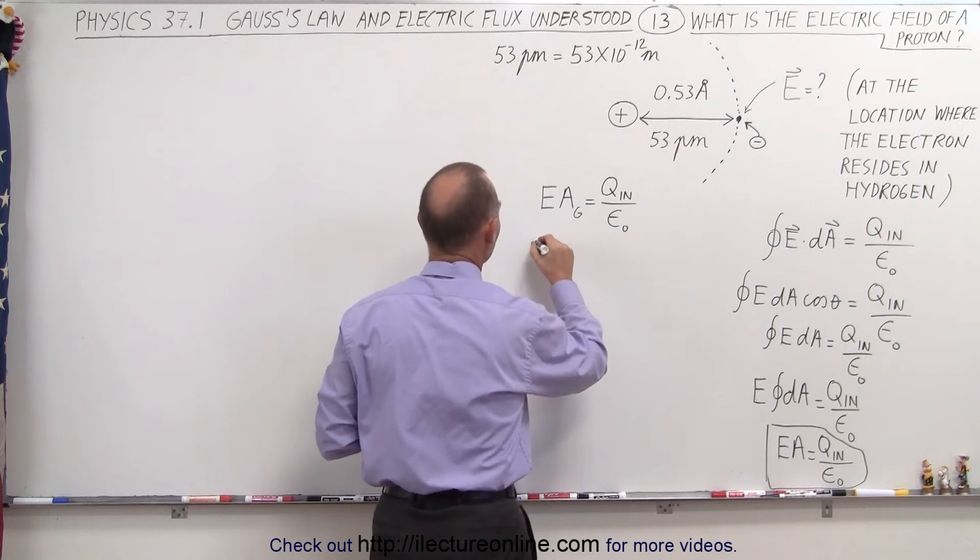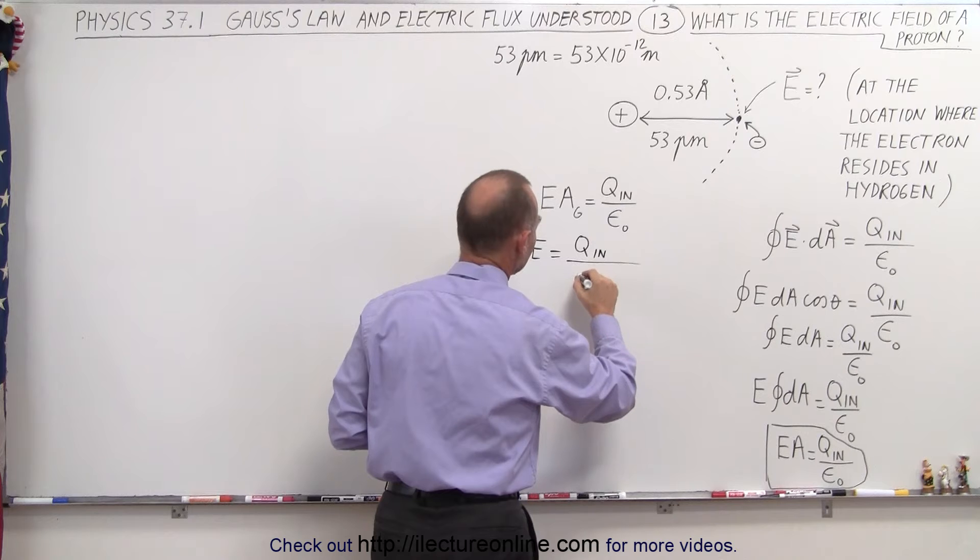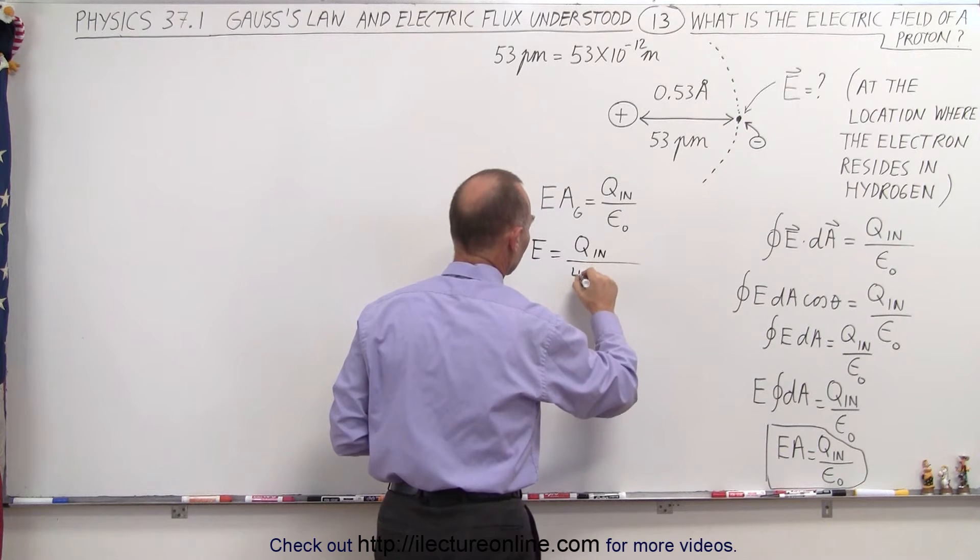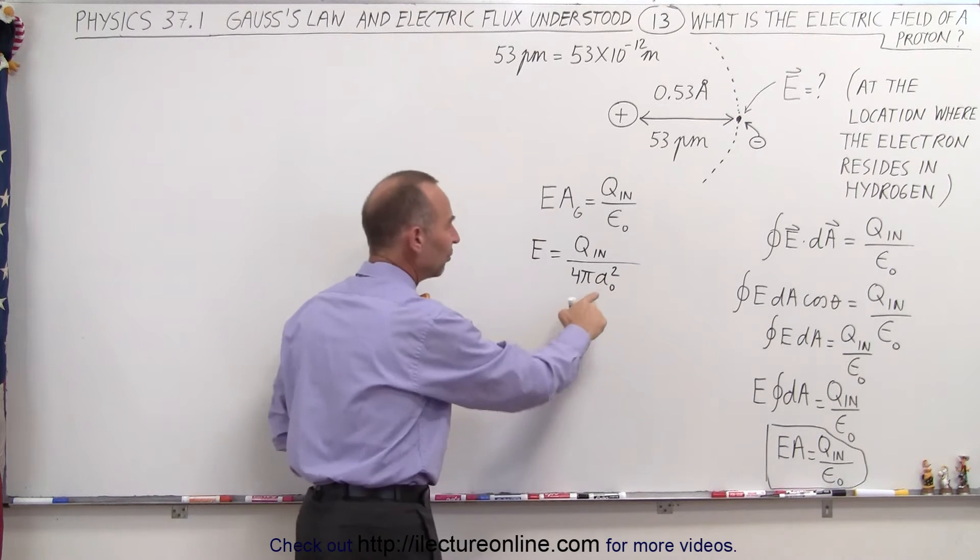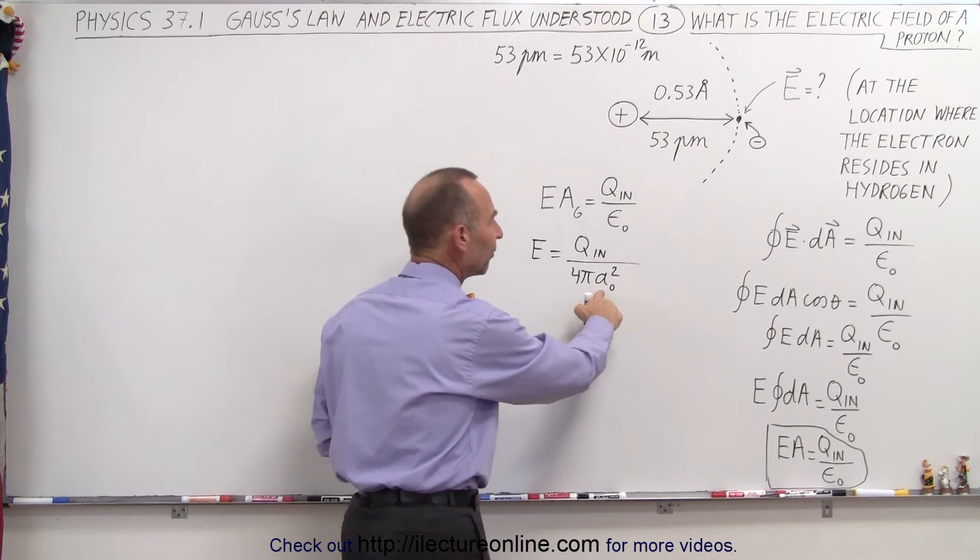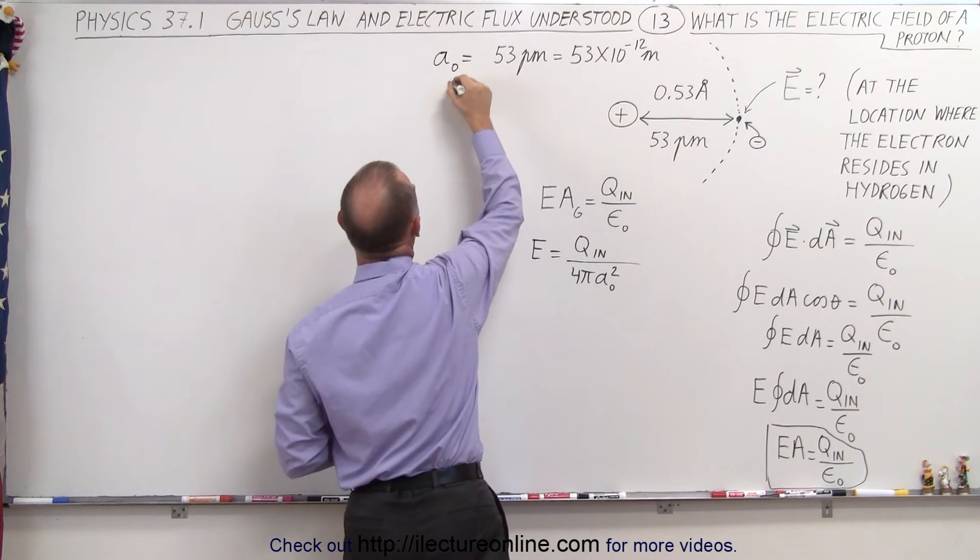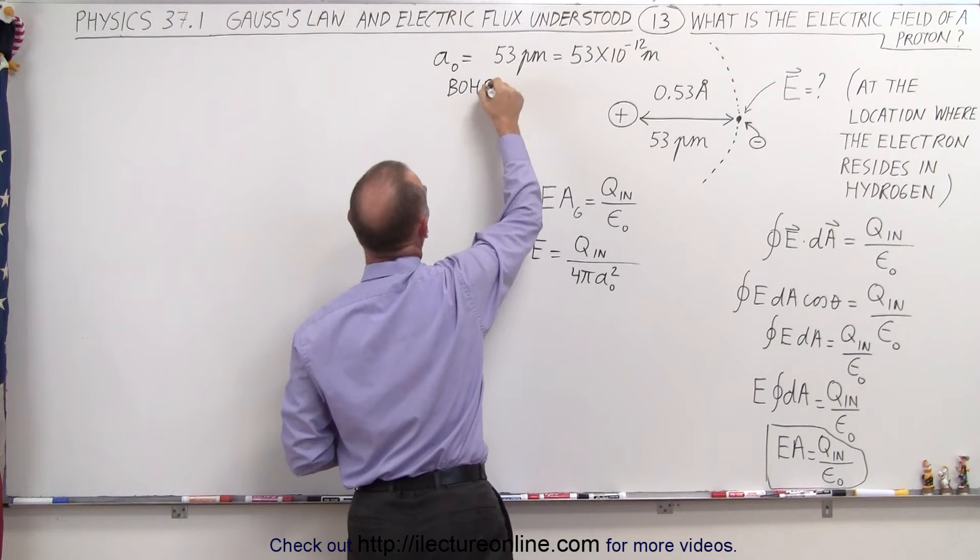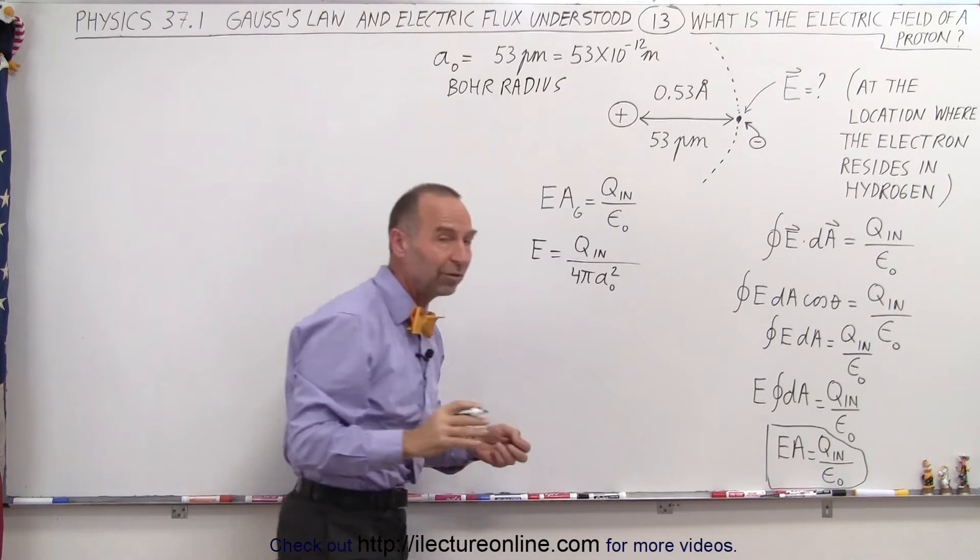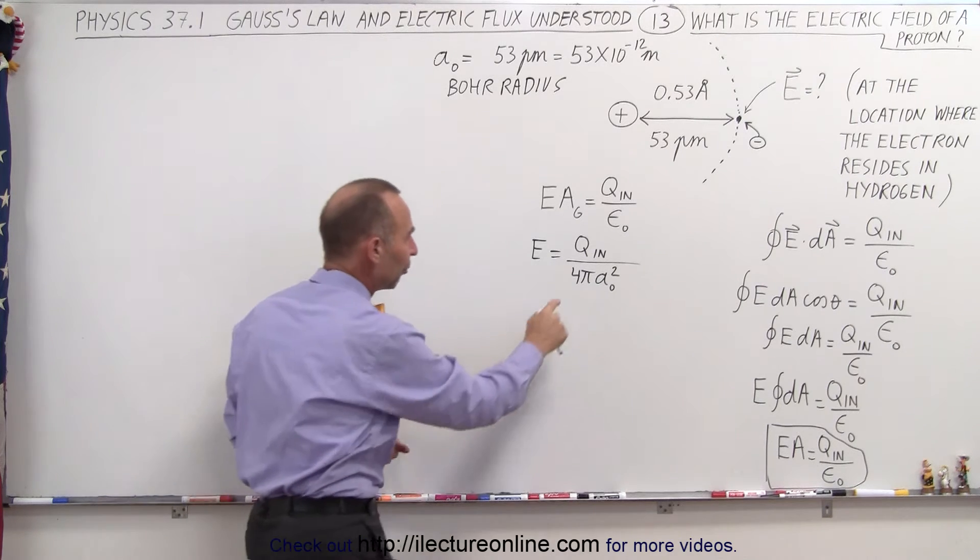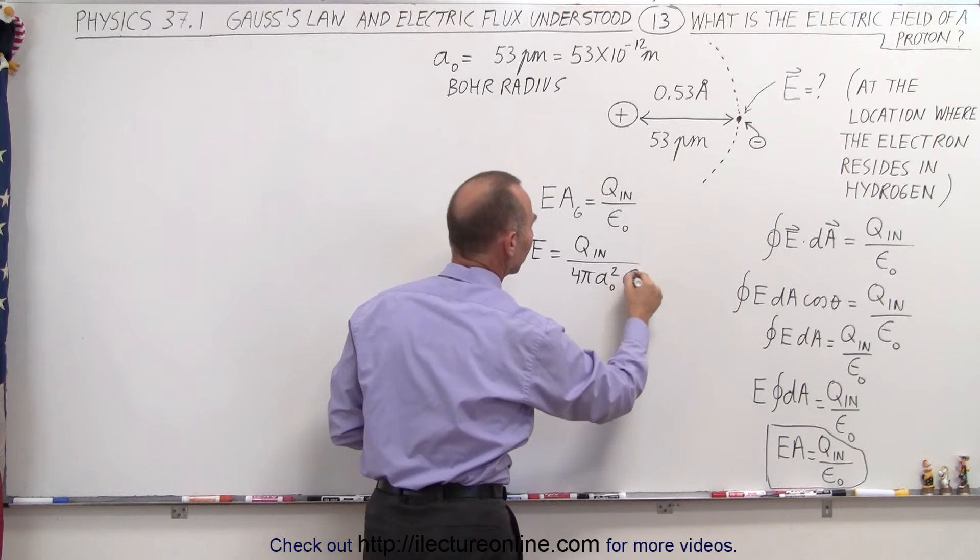So we have E is equal to the charge inside divided by the area of the Gaussian surface, which is going to be 4 pi A sub nought squared. Now the reason why I write A sub nought instead of R is because by definition that is what we call the Bohr radius. This is the determination of how far away the electron was from the proton in a hydrogen atom. And so this is 4 pi R squared, but we'll use A sub nought squared, times epsilon sub nought.